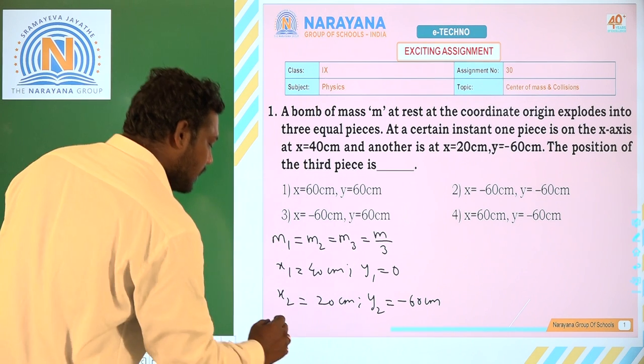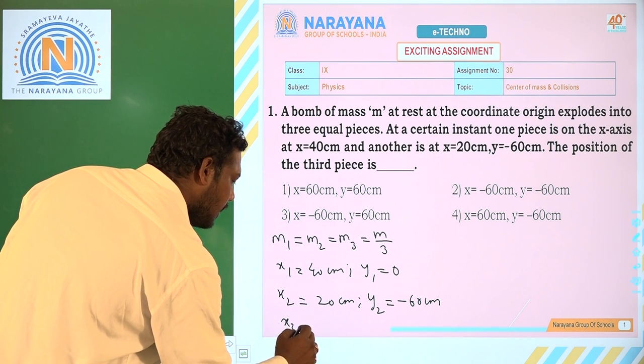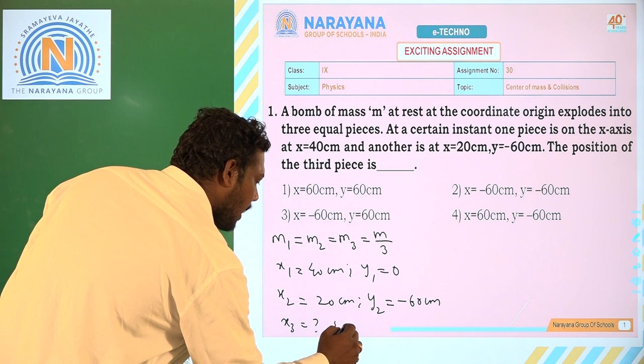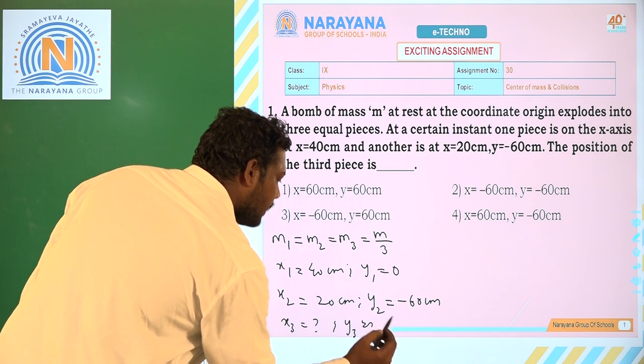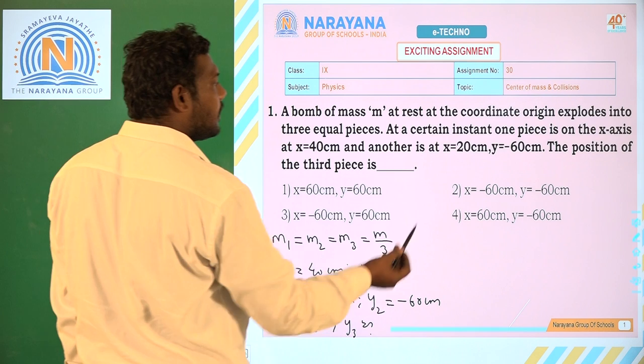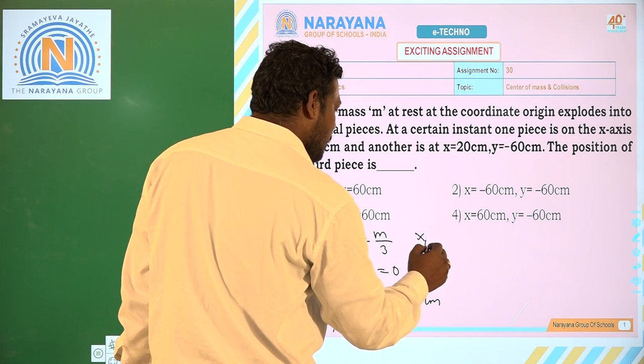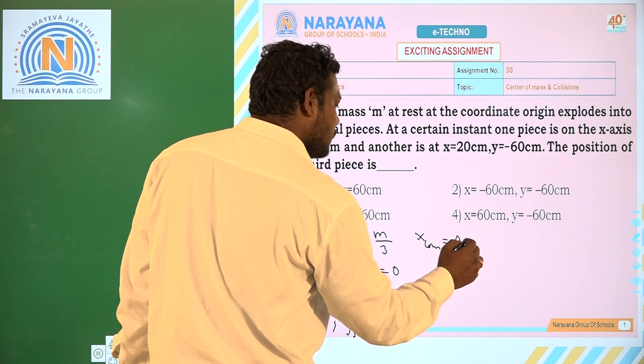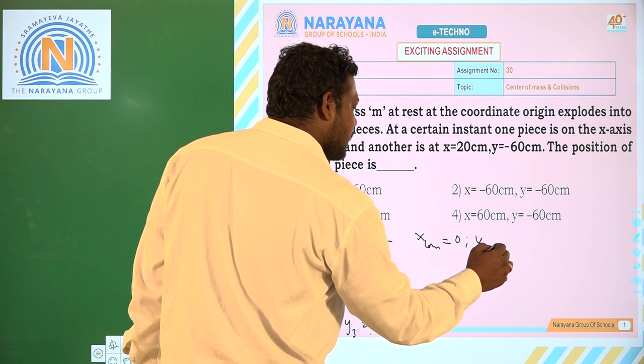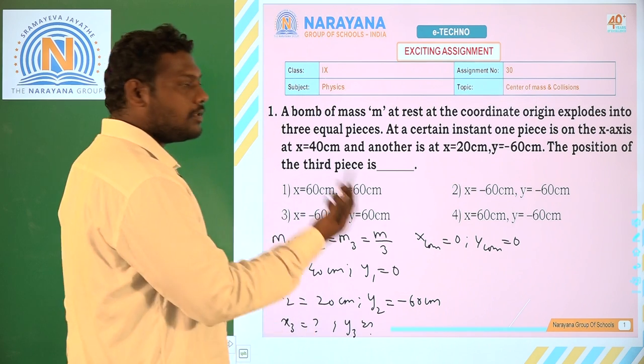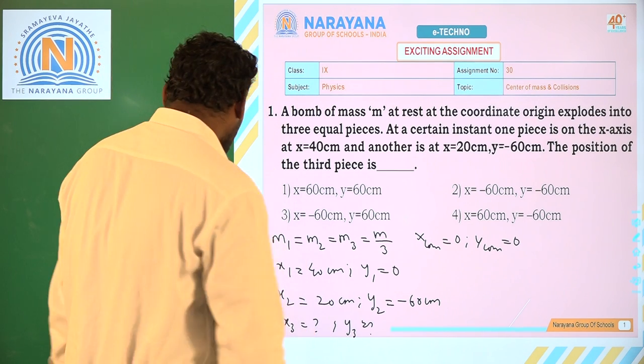The position of the 3rd piece, that is we have to find x3 and y3. Now, they have said that the mass coordinates at origin, that is xCOM=0 and yCOM=0 because the bomb is at origin.